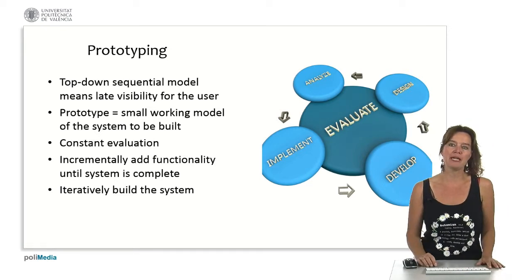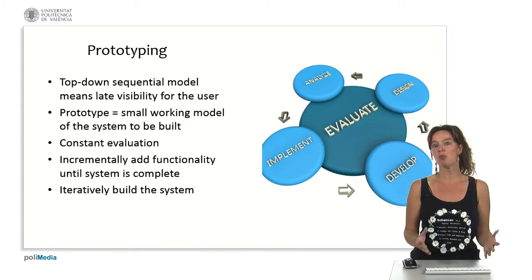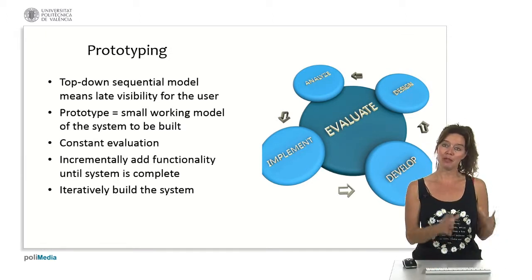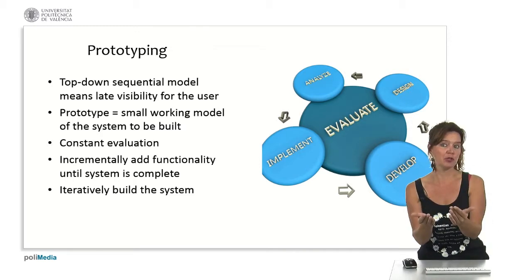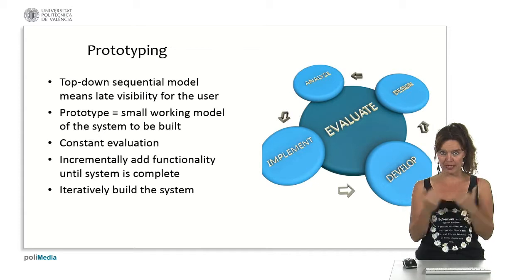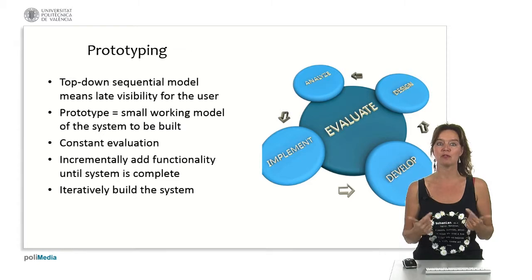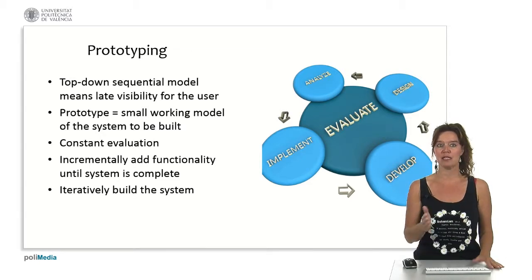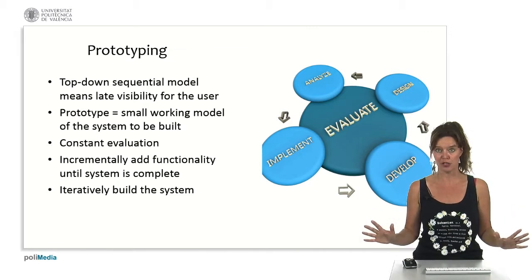And this for example is being implemented by the prototype models. A prototype is a small working model of a system that we need to build. And so we can build small prototypes of what we think the user needs. We can give it to the user, they can give us their feedback and we can go on. So we have a constant evaluation and an incremental development of the system. We add incrementally functionality until the whole system is complete and contains all the functionality that the user desires.